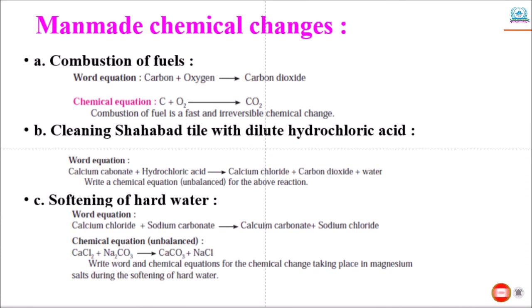Next is man-made chemical changes. First comes combustion of fuels. Wood, coal, petrol, or cooking gas are burned for getting energy.